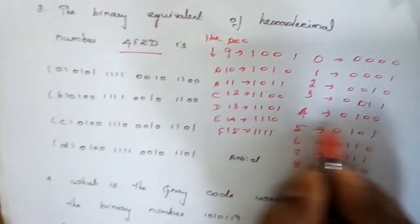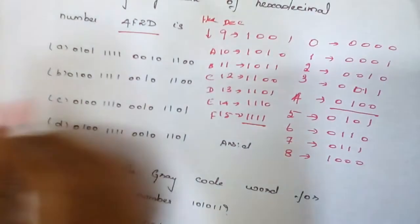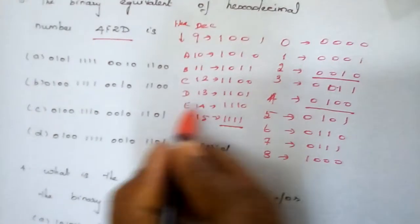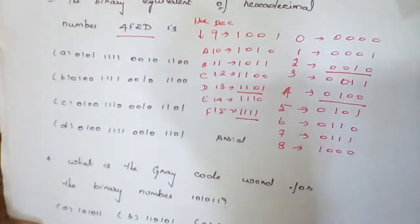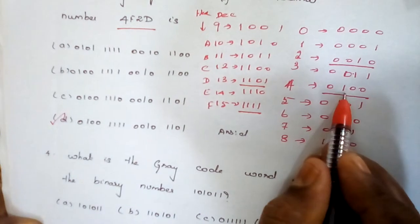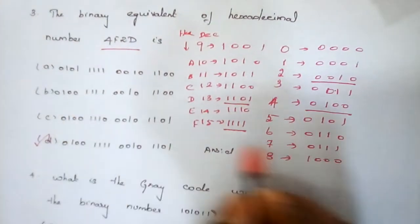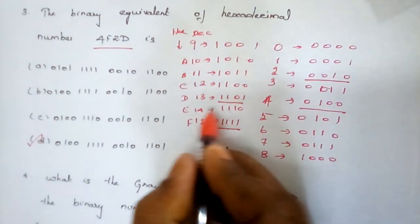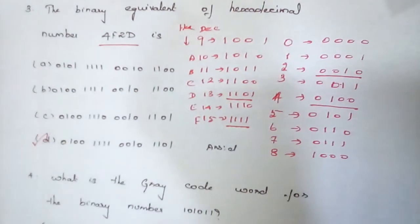This shows the decimal value and the hexadecimal value. For the hexadecimal number 4F2D: 4 = 0100, F = 1111, 2 = 0010, and D = 1101. So from the options, option D is the correct answer: 4 is 0100, F is 1111, 2 is 0010, and D is 1101.